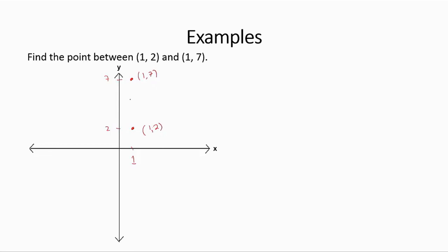We know the midpoint of this line segment lies between the two points. The x-coordinate is 1. The y-coordinate is the arithmetic mean of 7 and 2: (7 plus 2) over 2 equals 9 over 2, which is 4.5. So the midpoint is (1, 4.5). And yes, 2 plus 2.5 gets you there, and 4.5 plus 2.5 gets you to the point (1, 7). We found the midpoint.